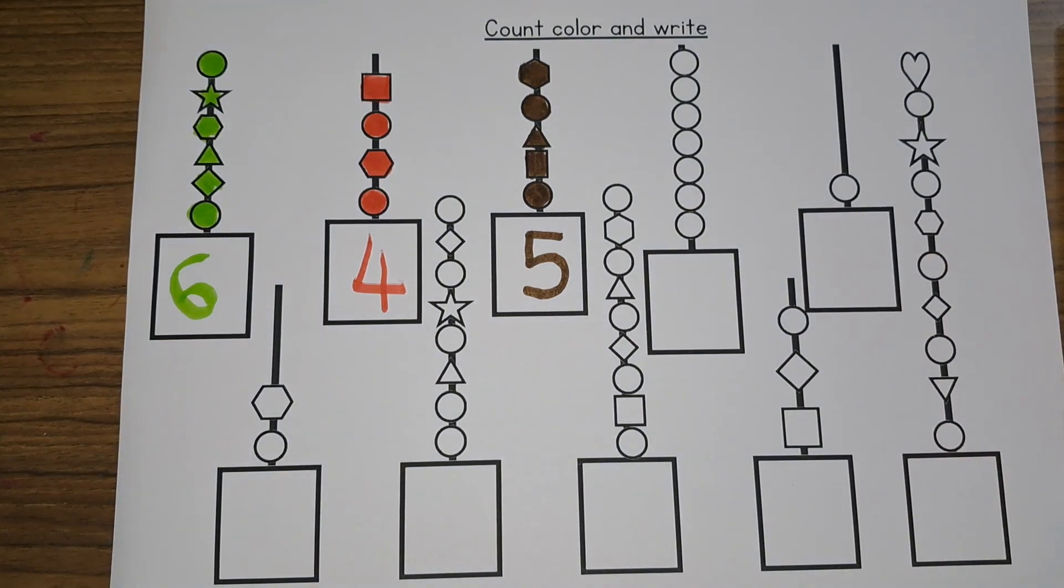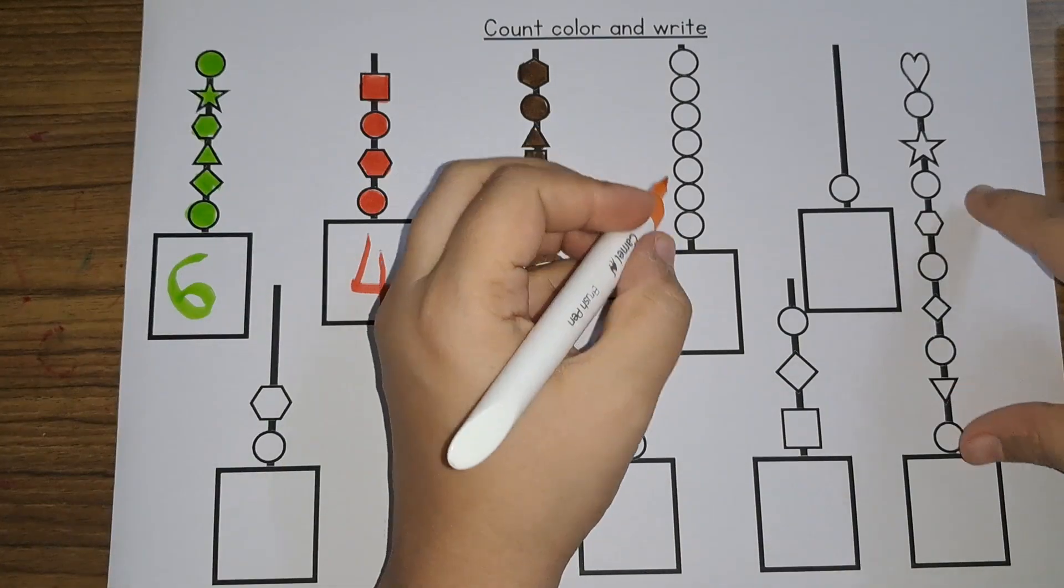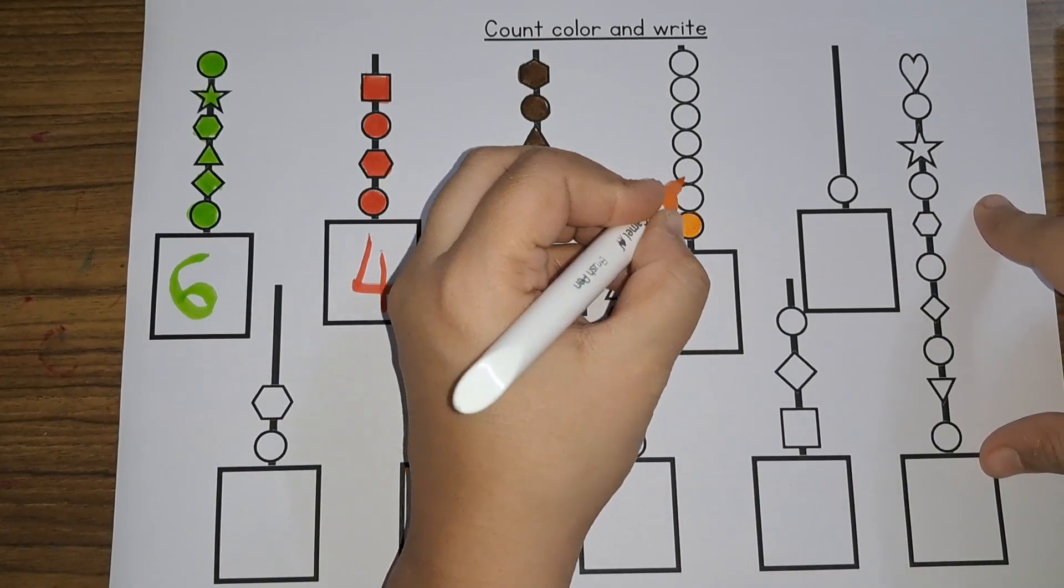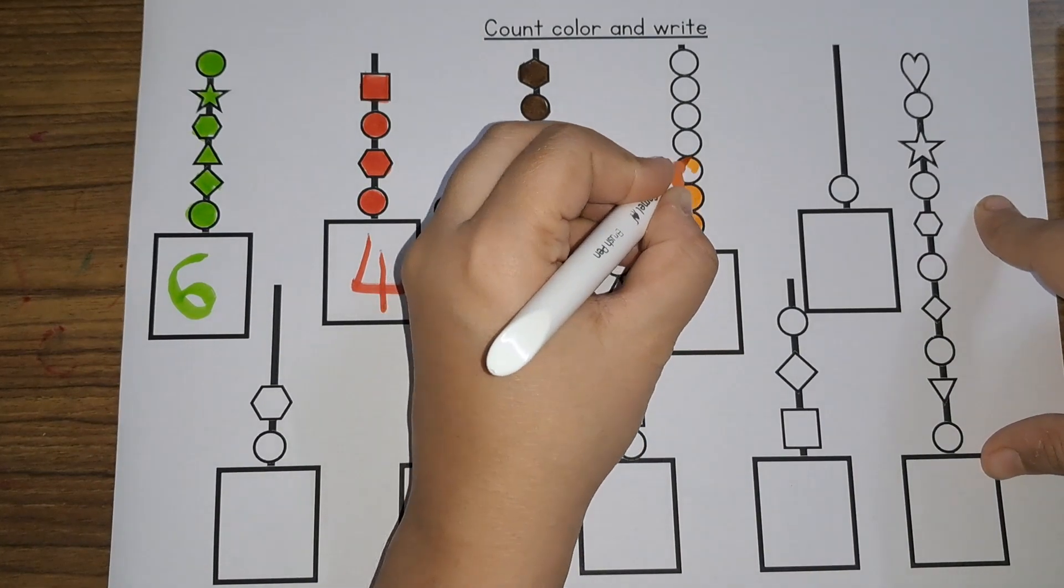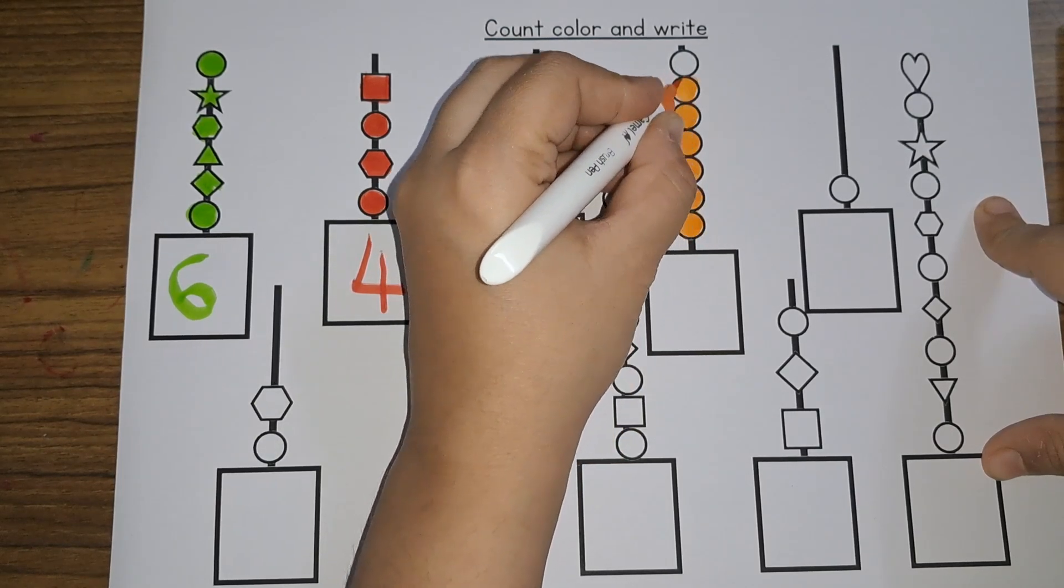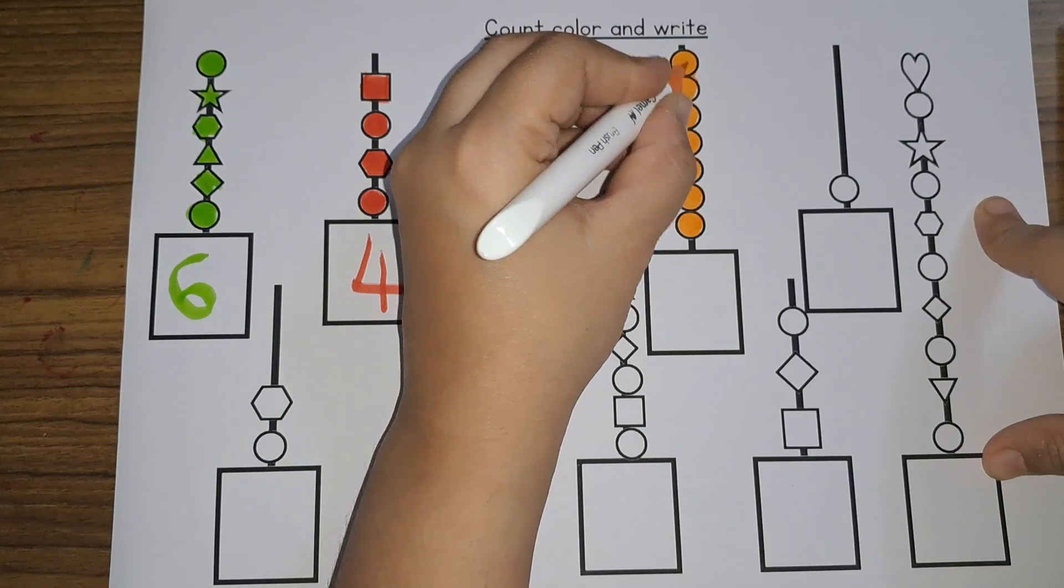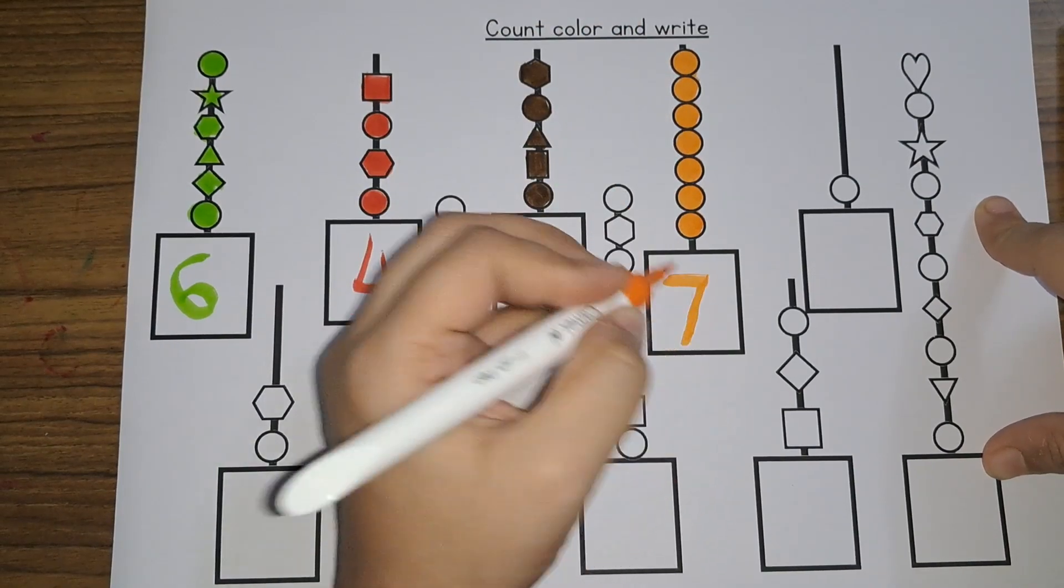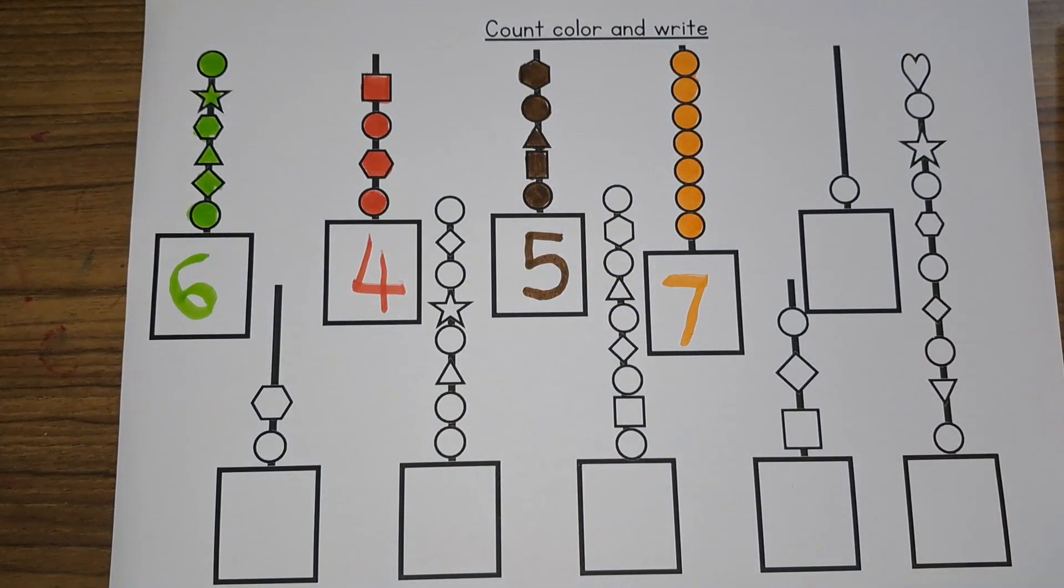Next that is 1, 2, 3, 4, 5, 6, 7. Number 7. Seven beads.